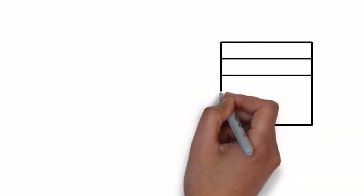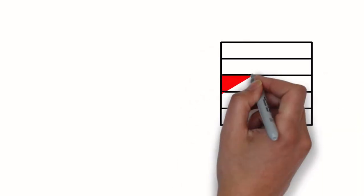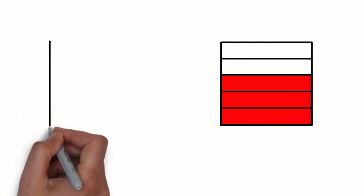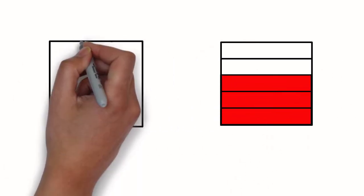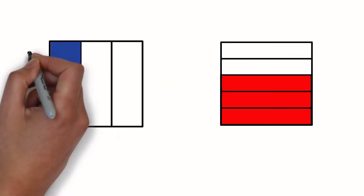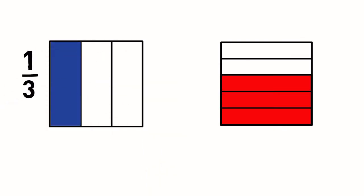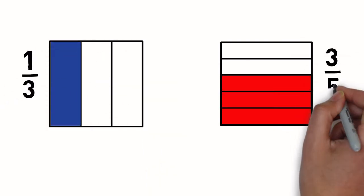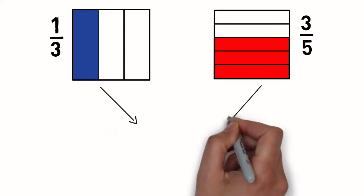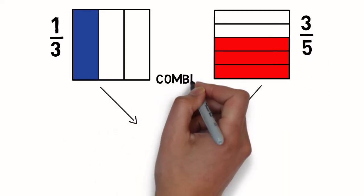This is Margaret's part of the whole cake. She gave one-third of it to her sister. We are looking for the one-third of three-fifths. So we are going to multiply the two fractions.